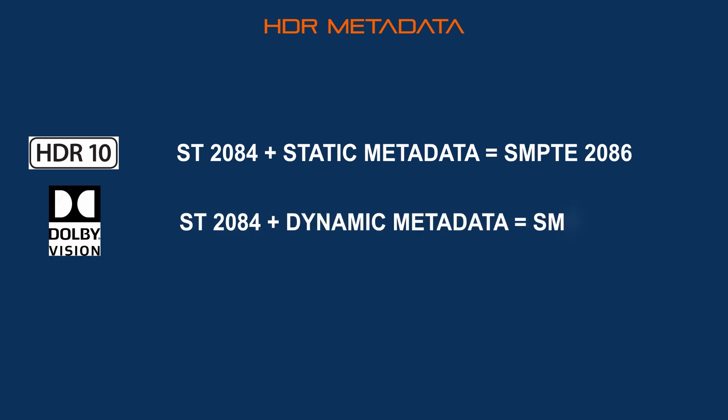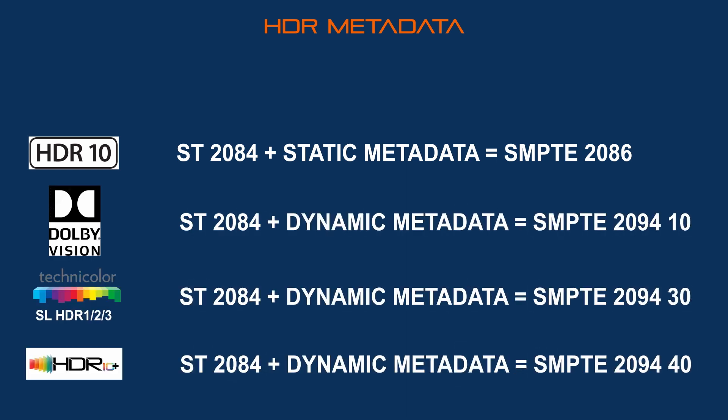Overall, the metadata is the file's table of contents. It contains all the information created during the masterization and allows the display device to display the content. There are two types of metadata: static and dynamic. Static means you have only one series of information to characterize the whole content — HDR10 uses static metadata. Dolby Vision, HDR10+ and SLHDR use dynamic metadata, which means there is one series of information per scene.